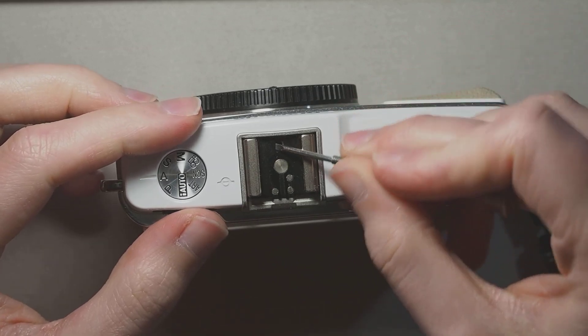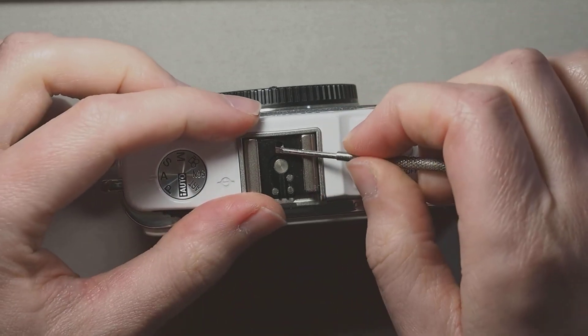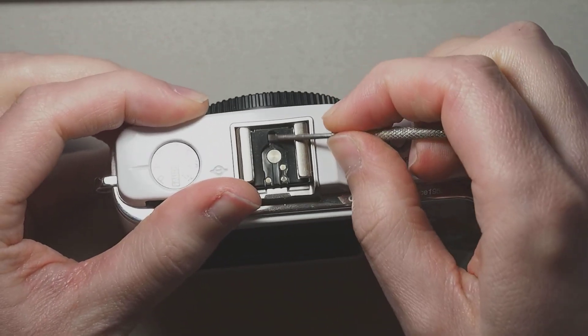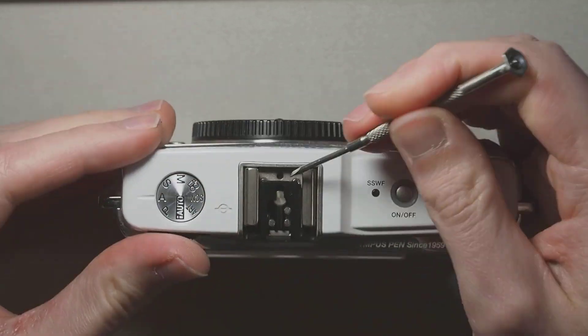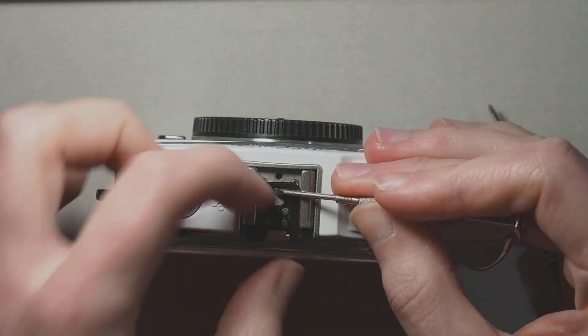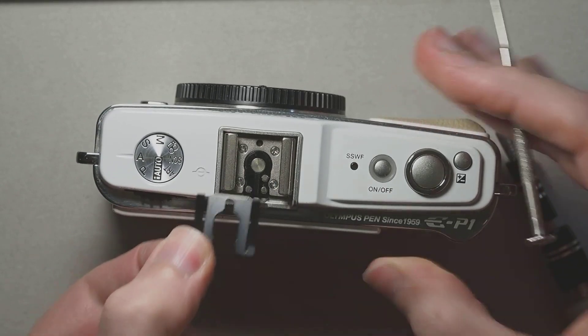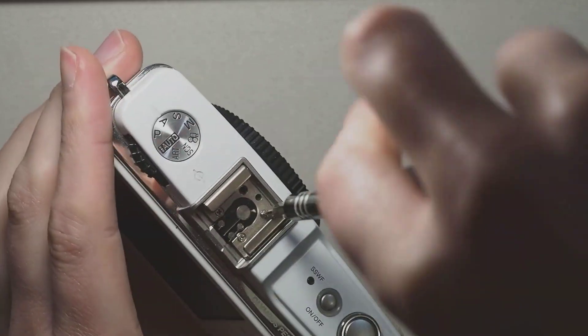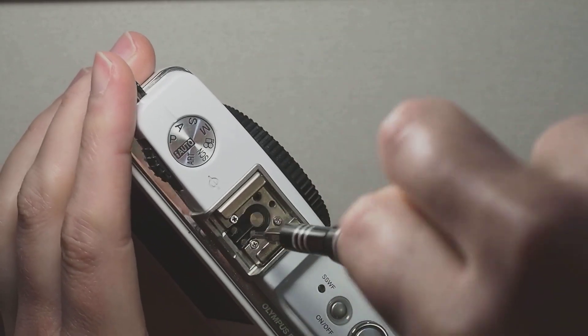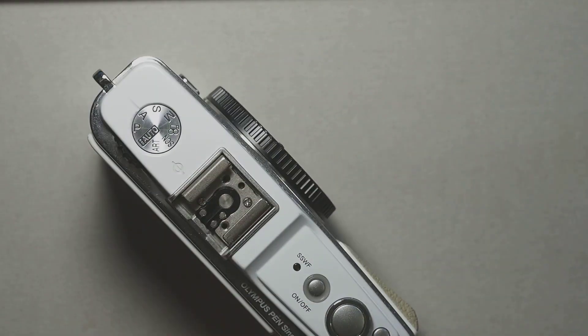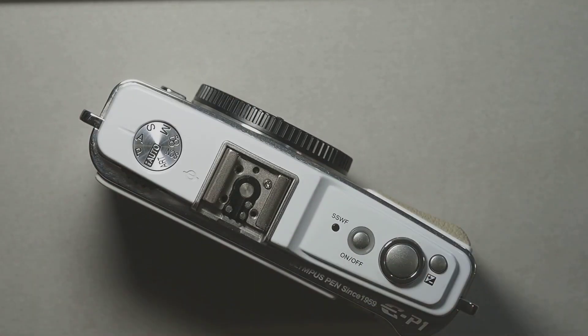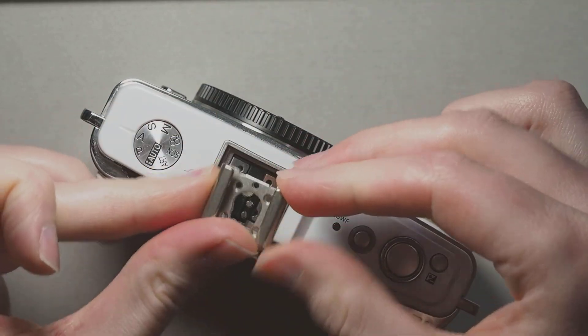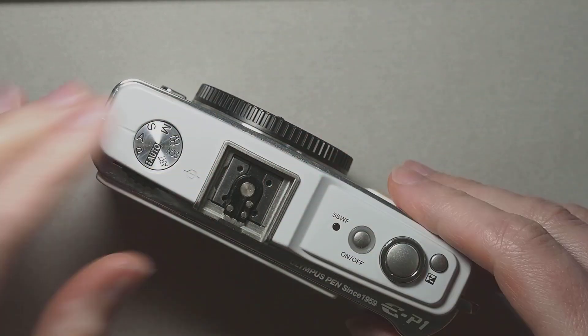The screws for the hot shoe are hidden under this black metal bracket which you can slide out like this. Then you can get to the screws and take them out. Lift out the hot shoe and its frame.